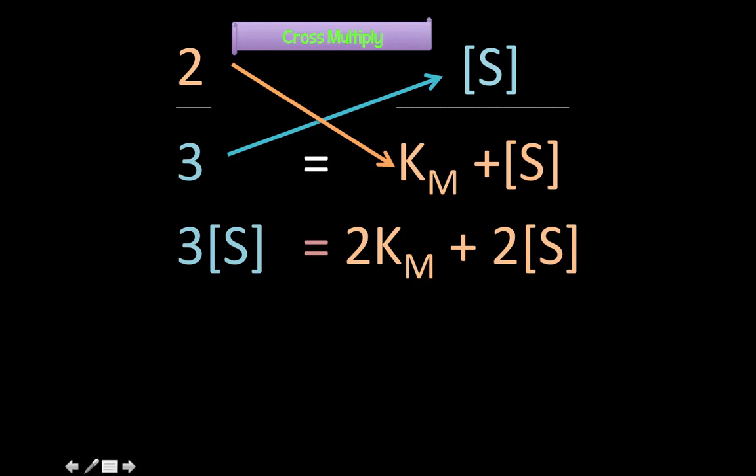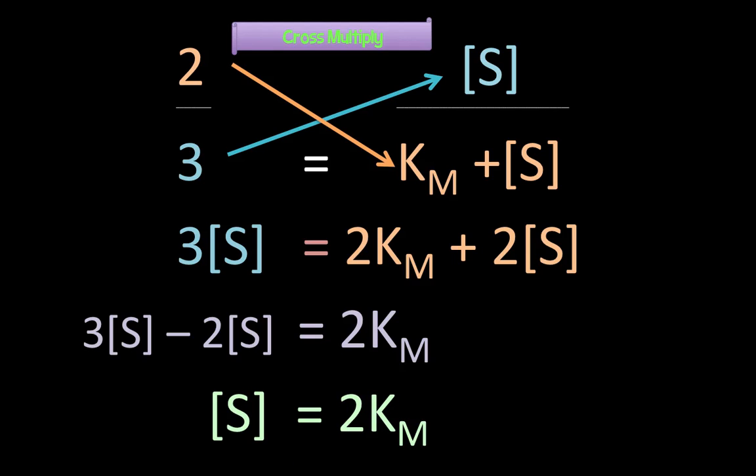Now what you want to do after that is bring all the S's on one side of the equal sign. So you get 3S minus 2S equal to 2 KM. And presto, you get the answer. Substrate concentration is equal to 2 KM. And that's the value. That's the answer, D.